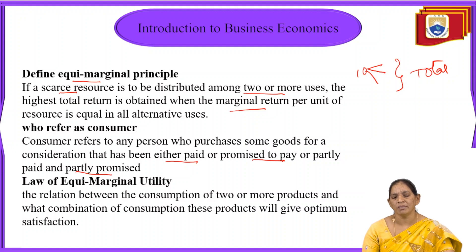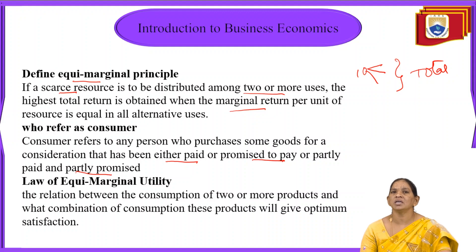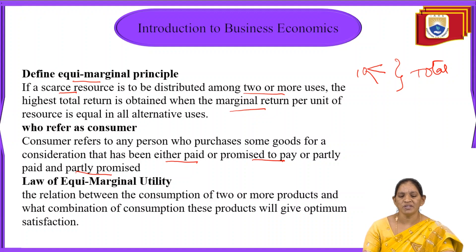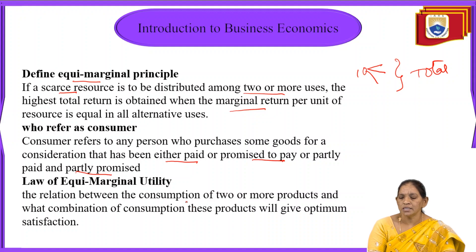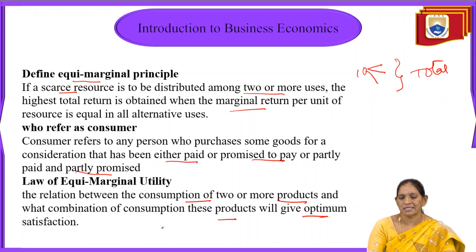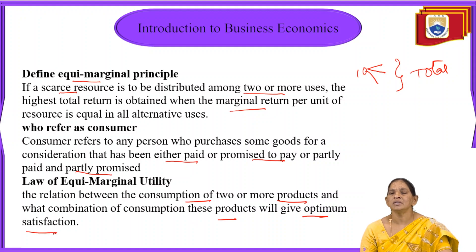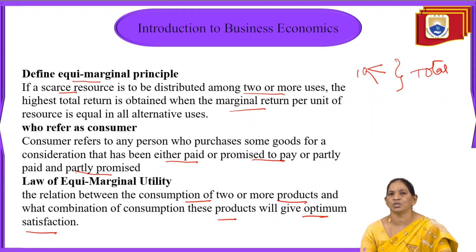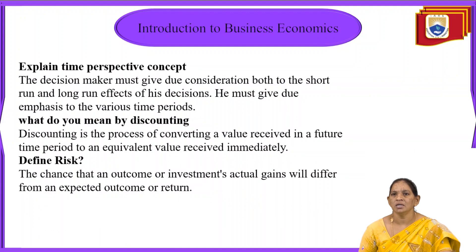Next, the law of equi-marginal utility. Utility means satisfaction. Equi-marginal means distribution of resources to get maximum satisfaction. The law of equi-marginal utility states the relationship between the consumption of two or more products — the combination of consuming those products gives maximum satisfaction. When two or more goods are consumed at the same time and the consumer gets maximum satisfaction, that is the law of equi-marginal utility.